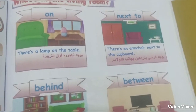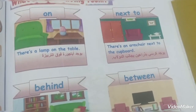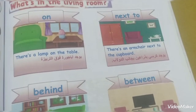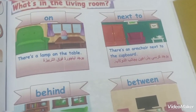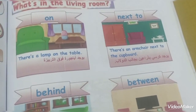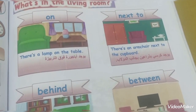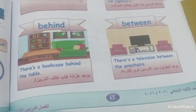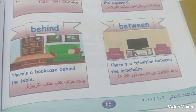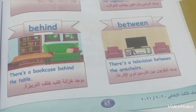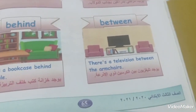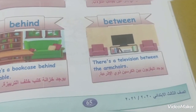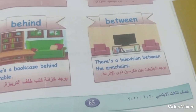Hello, I'm Asil. There is a lamp on the table next to. There is an armchair next to the cupboard. Behind — there is a bug case behind the table. Between — there is a television between the armchair.